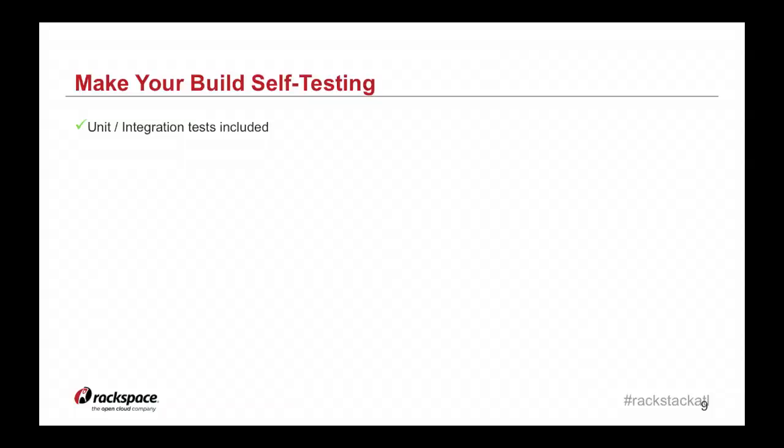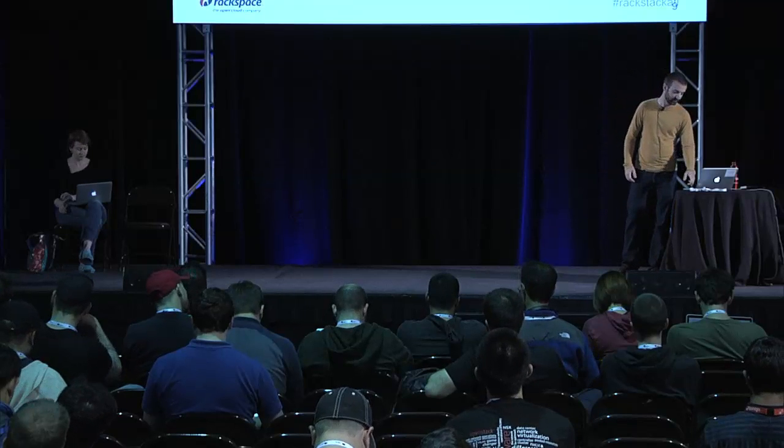Making your build self-testing basically means you should have tests, and we do have tests — unit tests, integration tests, and the Tempest test suite. But there aren't hard requirements on actually including tests. We've been debating whether the test percentage should never go down when you include a change. I think it hurts the continuous integration ability of OpenStack, but it's also understandable that certain changes cannot or should not have tests.